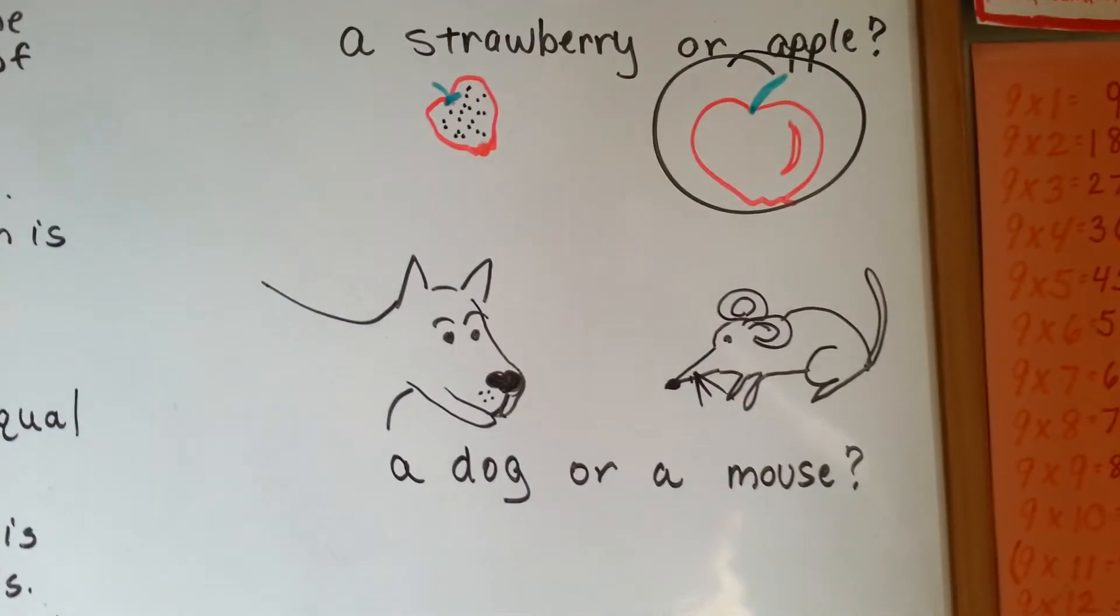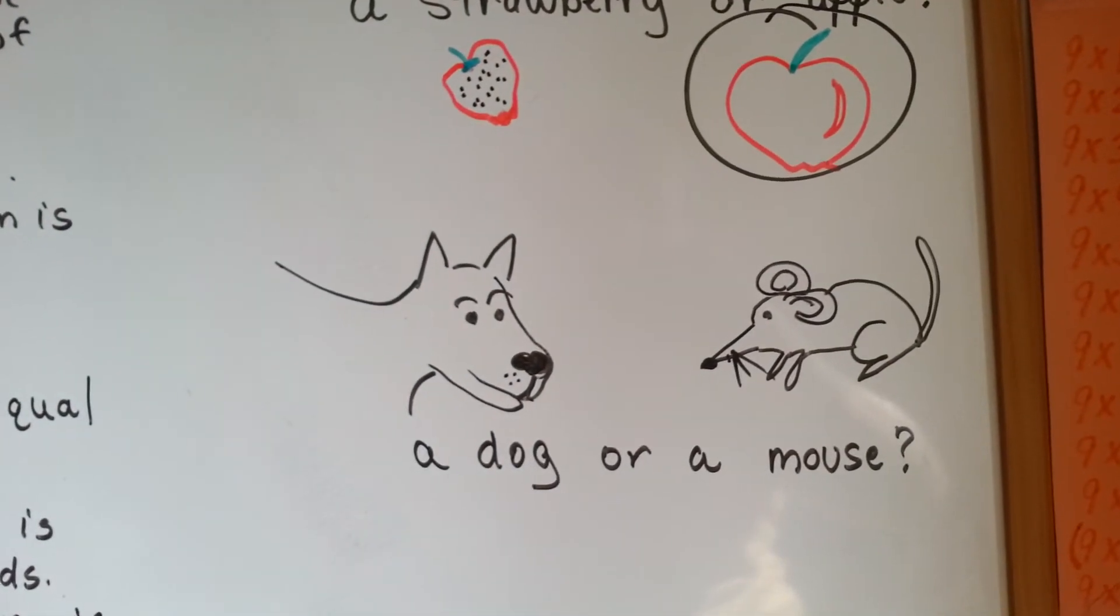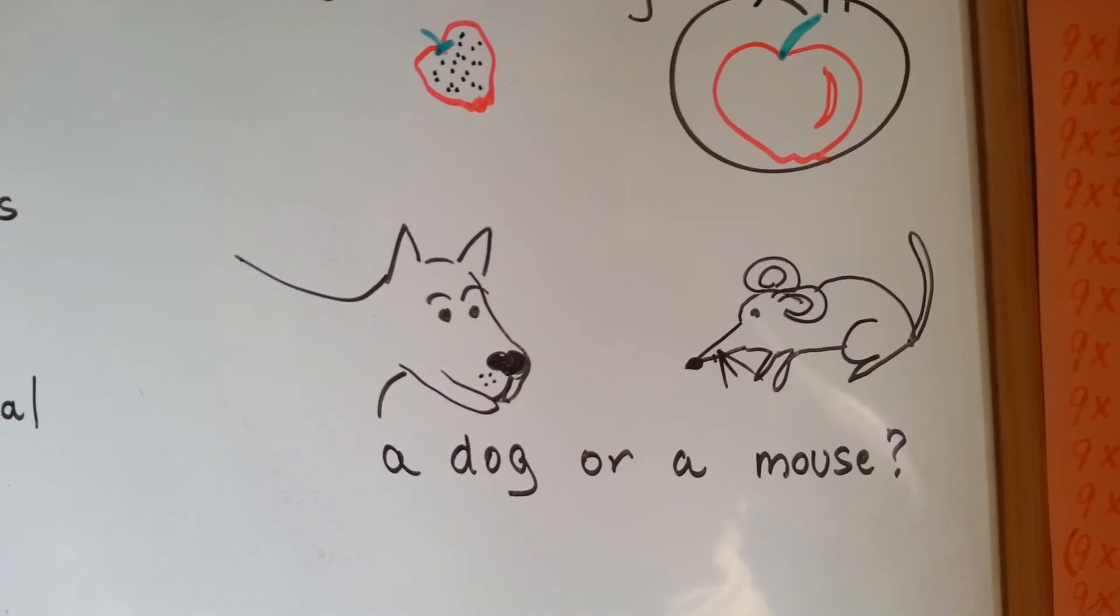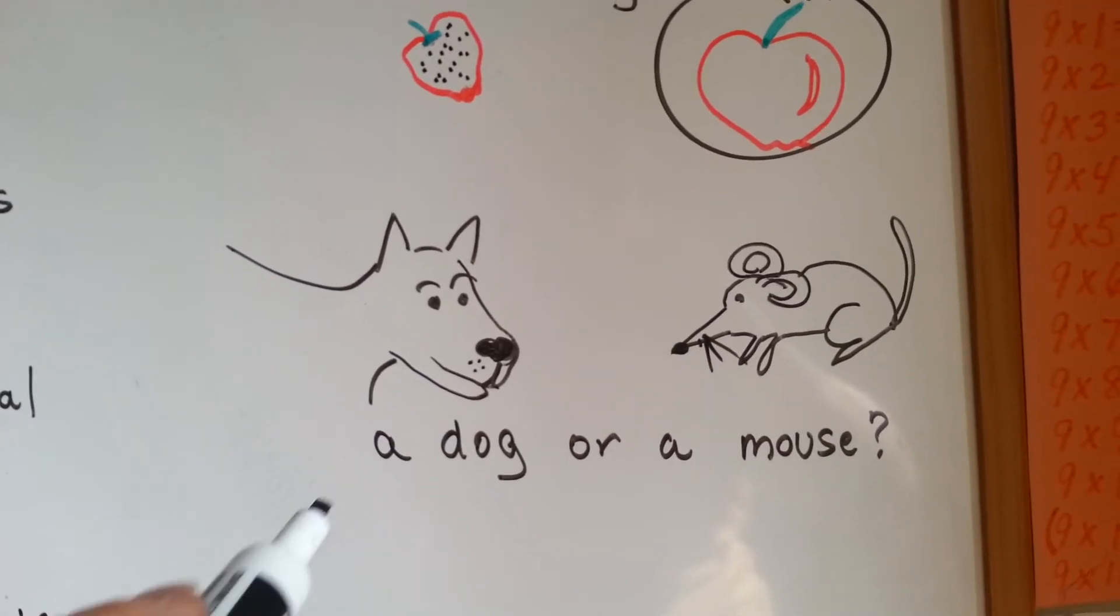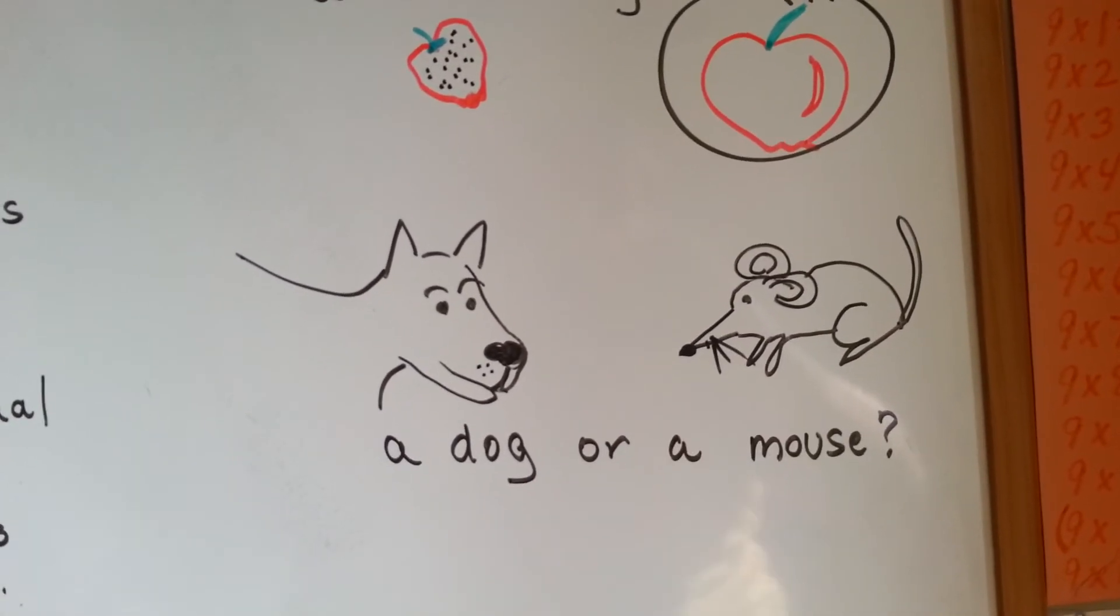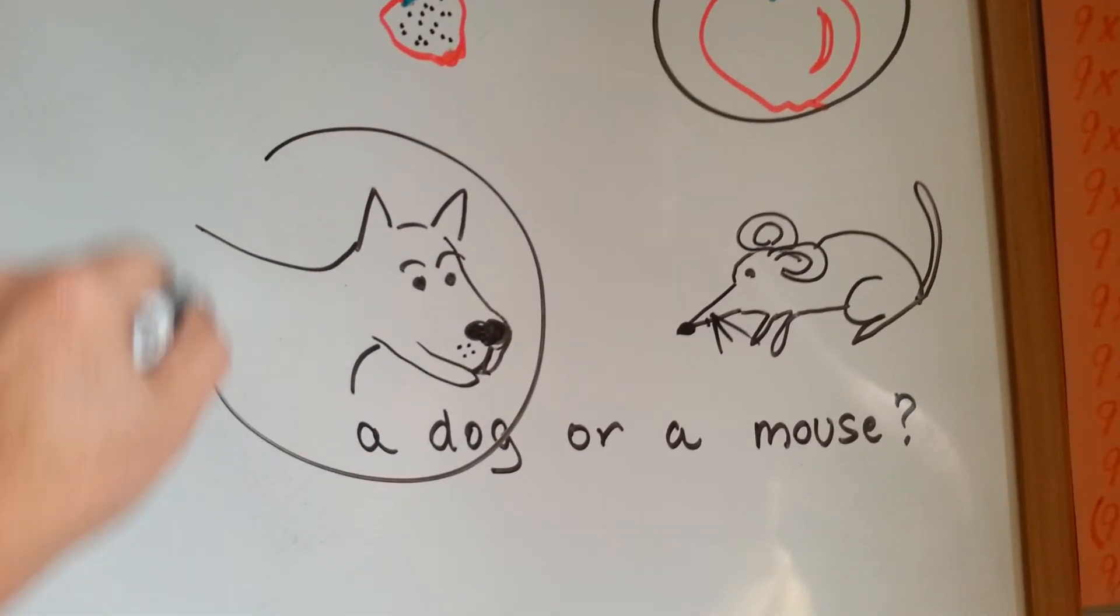Which would have more mass, a dog or a mouse? Which one would be heavier? Even the littlest dog would still be bigger than a mouse, right? So, a dog has more mass.